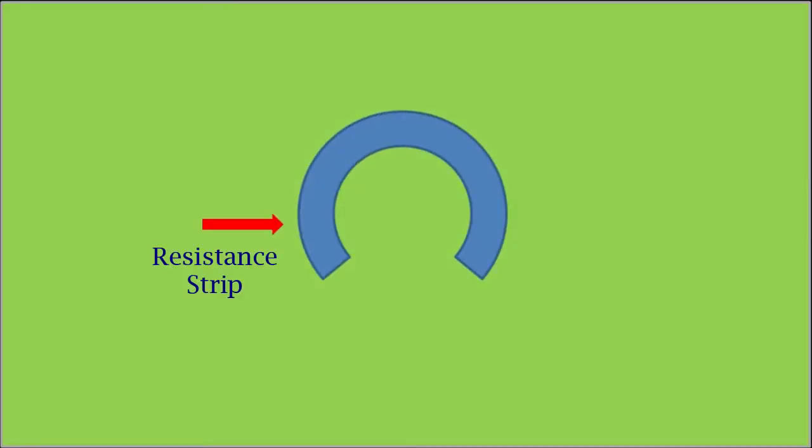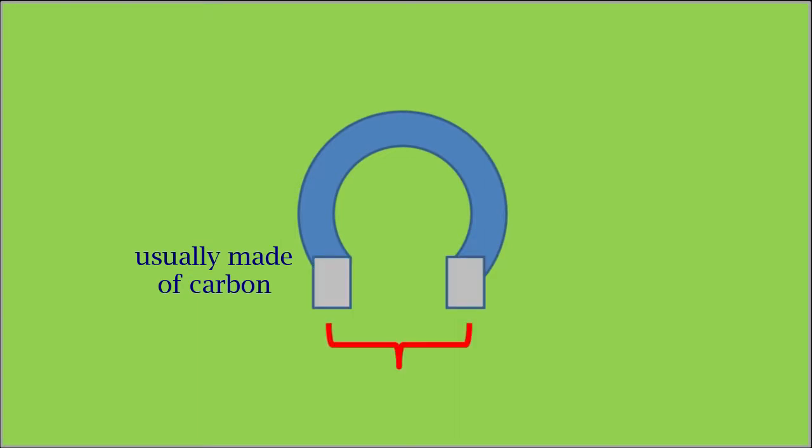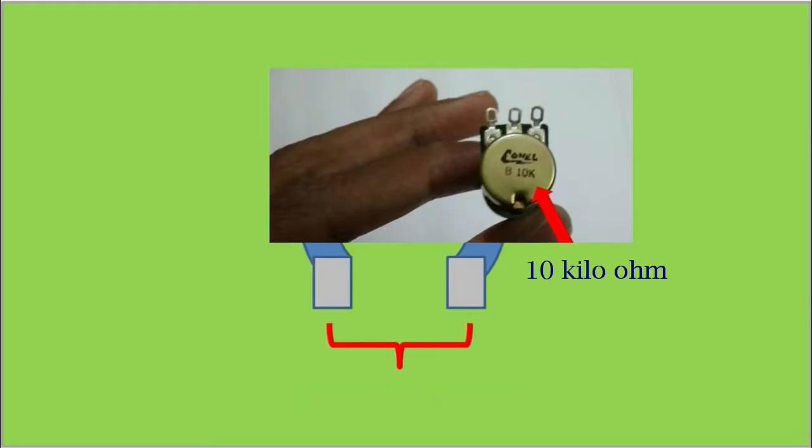Internally, a potentiometer will have a resistance strip usually made of carbon material. Both ends of this strip are brought out for connections across which we will get a constant resistance which is marked on the component.